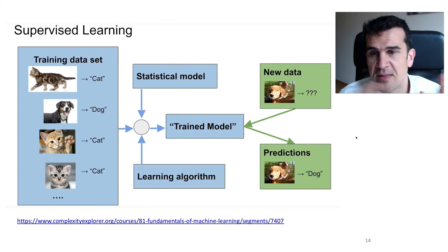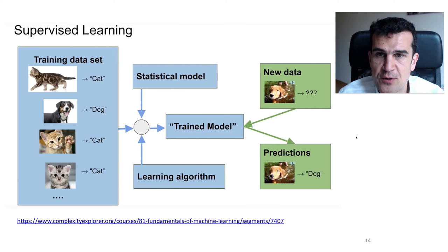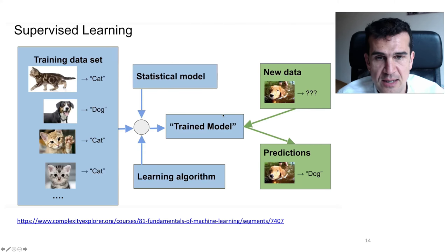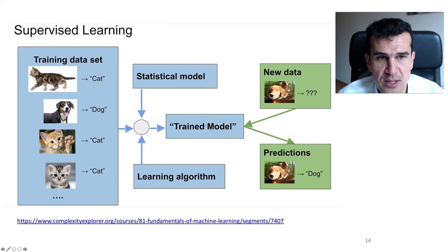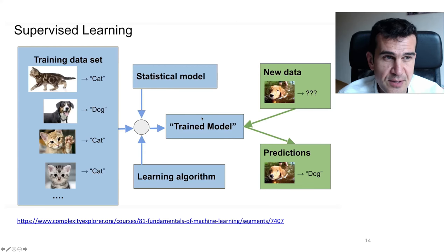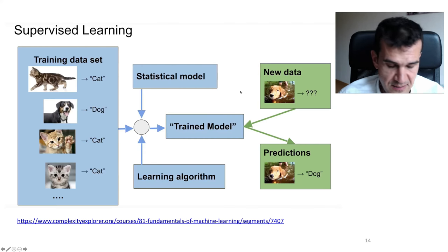It's memorizing too much of that particular training set, and when we want to use that model to make a prediction on new data, that random component is going to change because it is random, and our model may not behave as well. To put this in the overall context of machine learning, we'll revisit this figure: we've got a training data set, we use it to train a model, and we use this trained model to make predictions on new data. The training error is the error from using this trained model on the training data set, and the test error is the error when we use this trained model on new data.